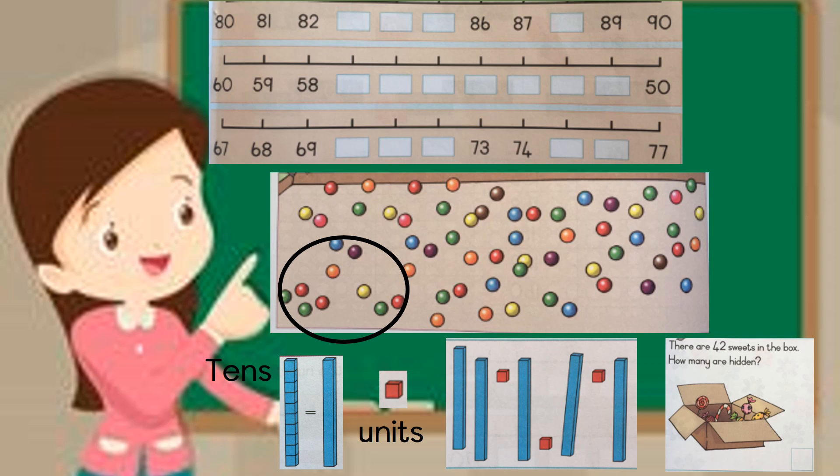Now you need to apply what you have learned to this problem. They give me a box of sweets in it. And if I quickly have a look, it looks like there is 1, 2, 3, 4, 5, 6 sweets in there. They tell me there are 42 sweets in the box. How many are hidden? So I can only see 6. So that means the rest of them must be lying there at the bottom somewhere.